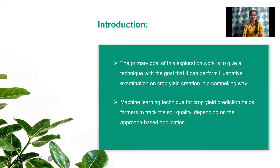Introduction. Our primary goal of this work is to suggest techniques for specific crops. Here we will use machine learning techniques for crop yield prediction, which helps farmers to track soil quality depending upon the approach-based application.